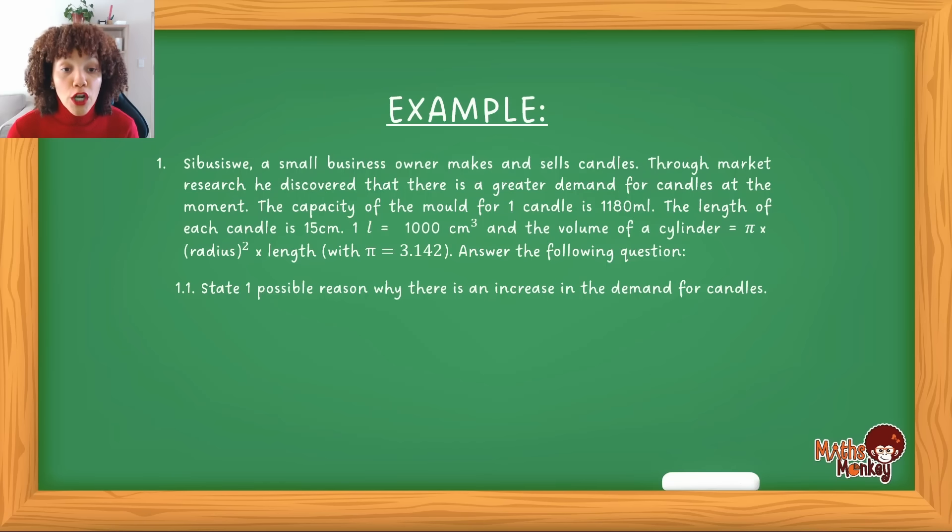And the volume of a cylinder is equal to pi times radius squared times length, where pi is 3.142. So based on this information, they want you to answer the following questions.